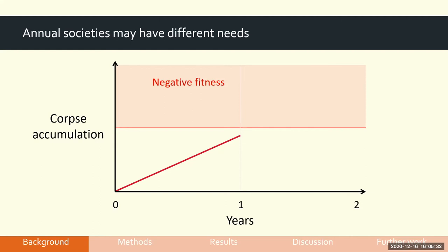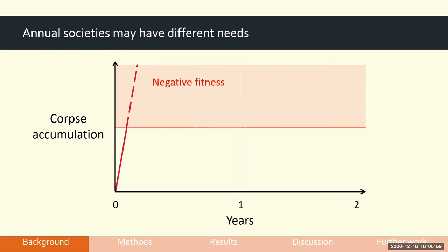Over the annual life cycle, it could be that corpse accumulation never reaches the negative fitness threshold, so no corpse management strategies evolve. Or it could cross that threshold late in the colony life cycle when the colony is already going into decline, so there's no point acting on it. Or it could cross the threshold early on, in which case you would see corpse management strategies, but we'd have no idea which ones they would use or if they use something totally different.